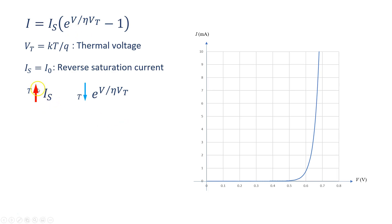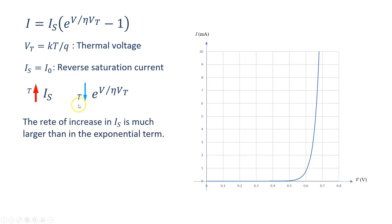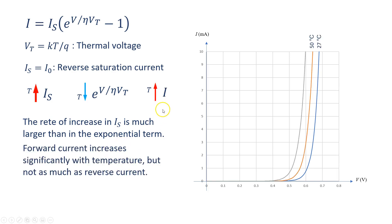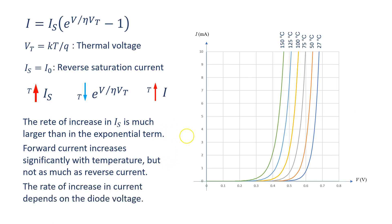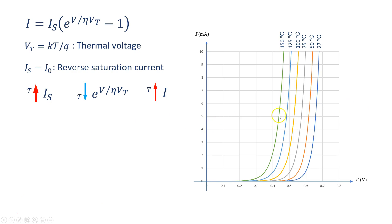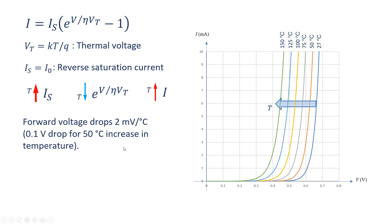IS is increased by temperature and the exponential term is decreased with temperature — there is a competition between these two terms. But the rate of increase in IS is much larger than in the exponential term, and therefore the forward current increases with temperature, but not as much as the reverse current, because of the reduction by the exponential term. The rate of increase in current depends on the diode voltage. Because of the increase in current, the forward voltage is reduced by increasing the temperature — the forward voltage drops 2 millivolts per degree Celsius.